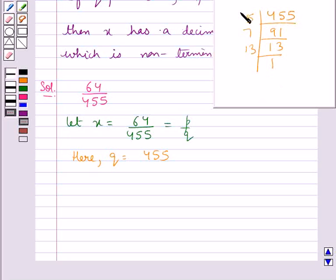This is the prime factorization of the denominator, that is q, that is 455. We have q equal to 455 written as 5 multiplied by 7 multiplied by 13.